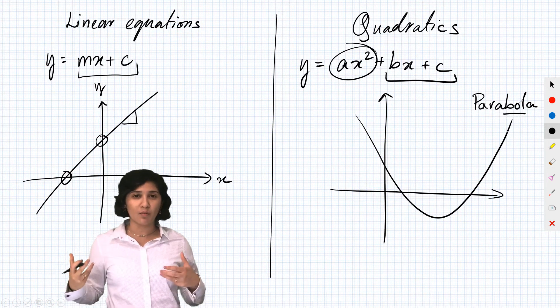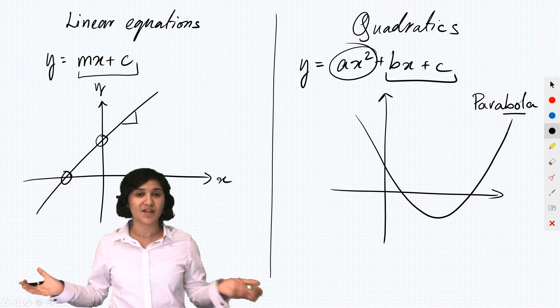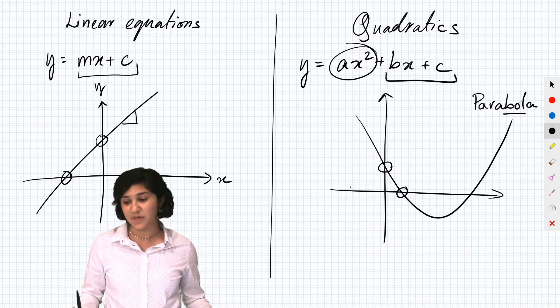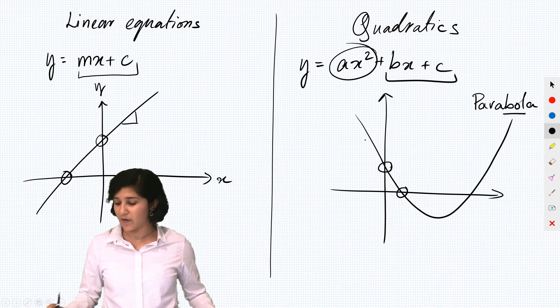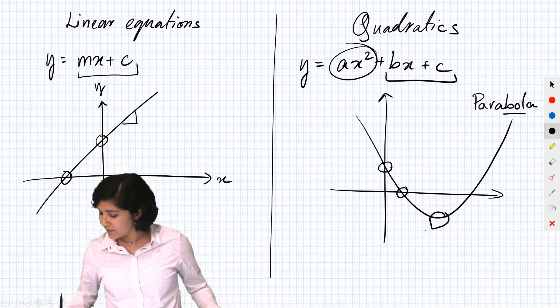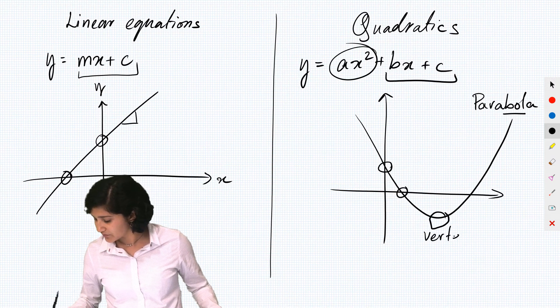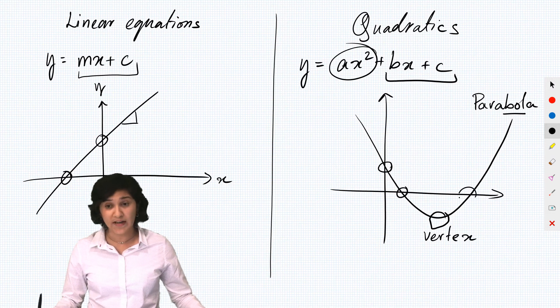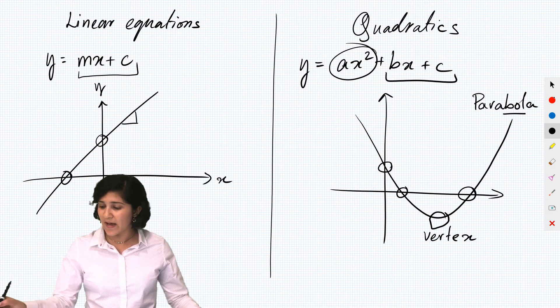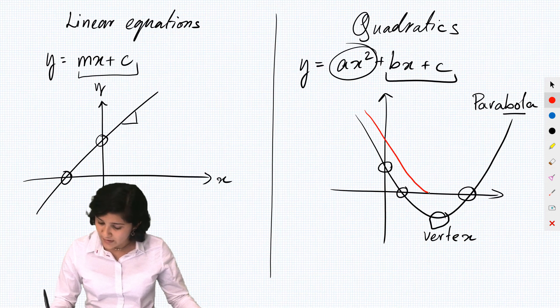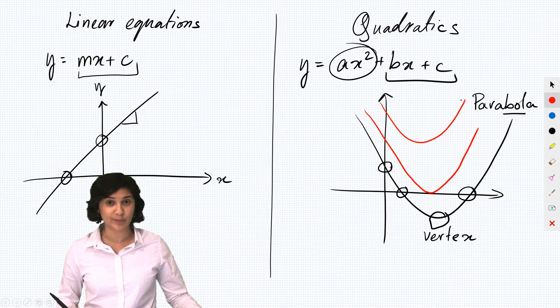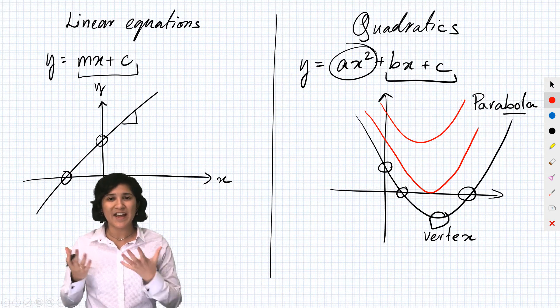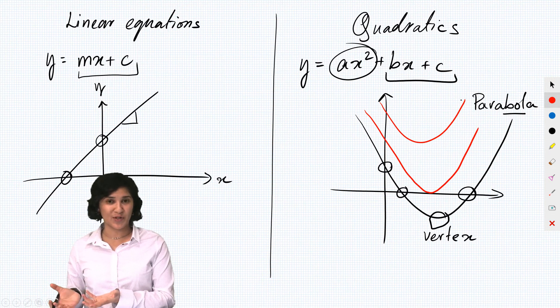So parabolas have a lot more of the complex features of other functions. They still have the x and y-intercepts, but they also have this point where the graph turns around, and for parabola that's called a vertex. They also can have more than one x-intercept. They might also have just one x-intercept or no x-intercepts at all. So these are all features of more complex functions that we can capture with quadratic equations.